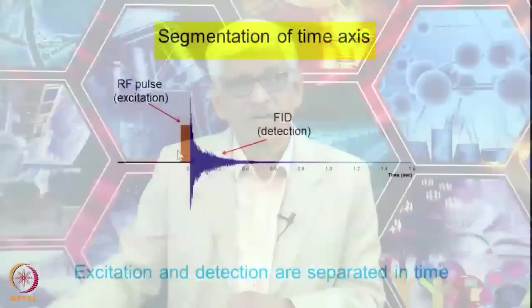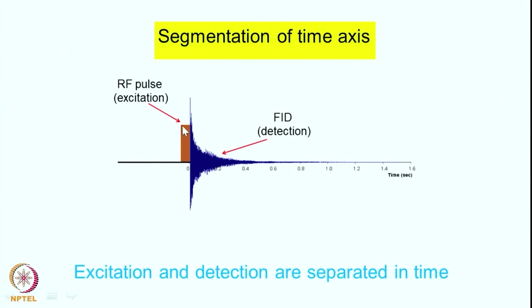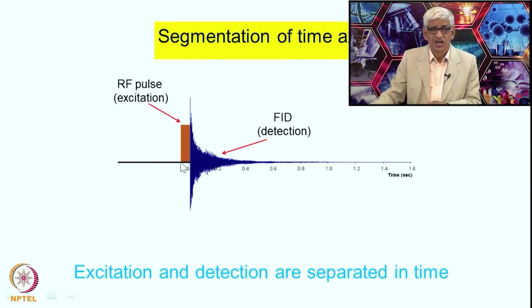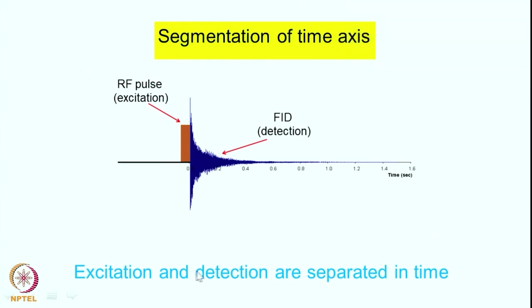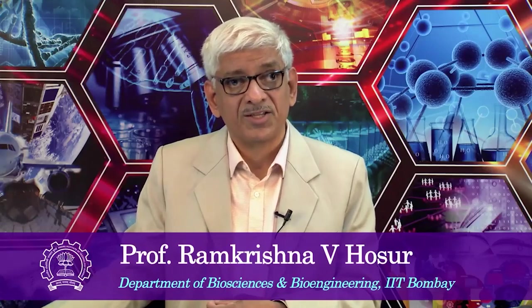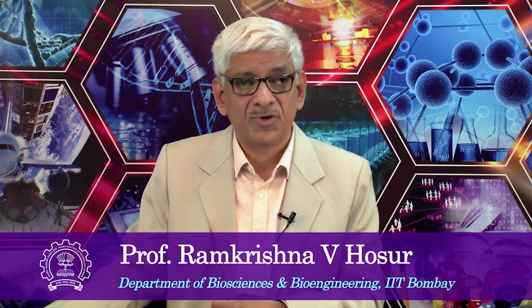There is one other important consequence of Fourier transform NMR that is often not discussed but is most important. Recall how we perform the experiment: we apply an RF pulse — the excitation pulse — for a short time tau of perhaps 1–5 microseconds, then collect the FID when there is no RF and no perturbation. This means excitation and detection are separated in time along the time axis. This is called the segmentation of the time axis, and it has important implications for a variety of further developments in multidimensional NMR spectroscopy and various pulse techniques developed subsequently.